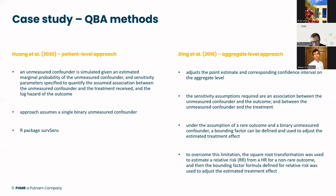As you may recall from the Kaplan-Meier curves, we're not in the rare outcome setting. To overcome this limitation, the square root transformation is used to estimate a relative risk from a hazard ratio for a non-rare outcome, and then the bounding factor formula — provided for a relative risk — is used to adjust the estimated treatment effect. This method is implemented in R without a package, and it's relatively straightforward, as you'll see in a moment.